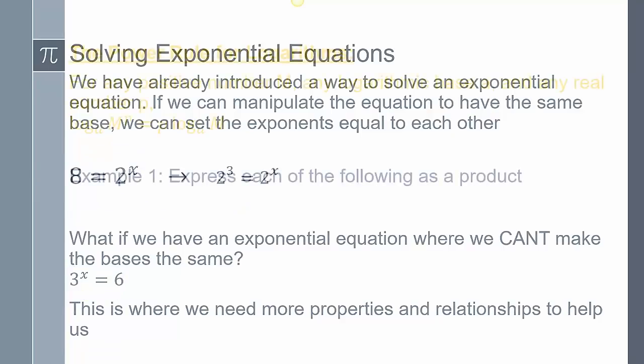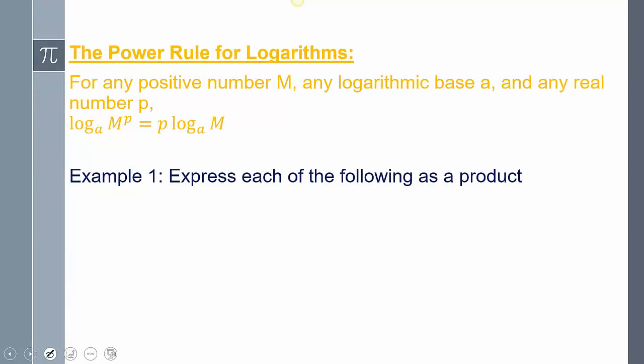We need more properties to help us with this situation. So we're going to introduce the power rule for logarithms, and it says for any positive number M, any logarithmic base a, and any real number p, we can use this formula: log_a(M^p) = p·log_a(M). If you look at it, it just looks like they took the exponent and moved it to the front.